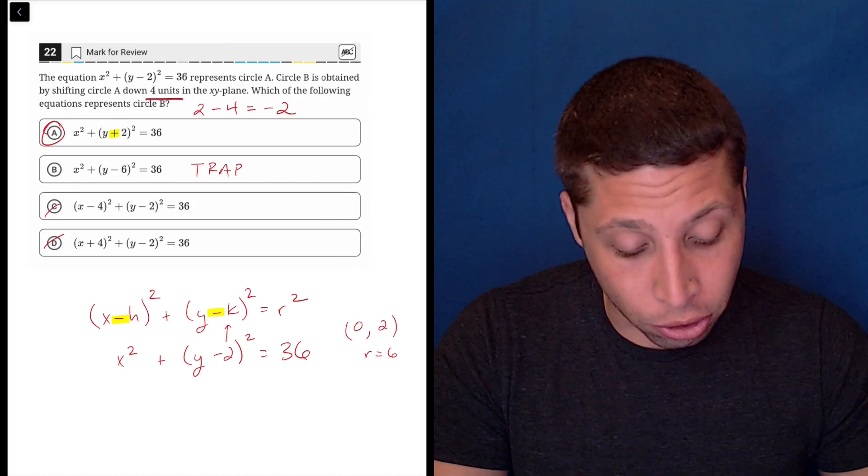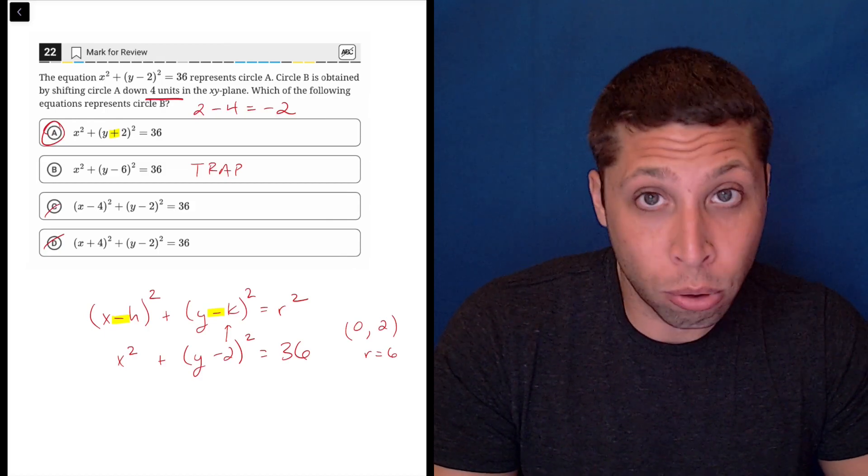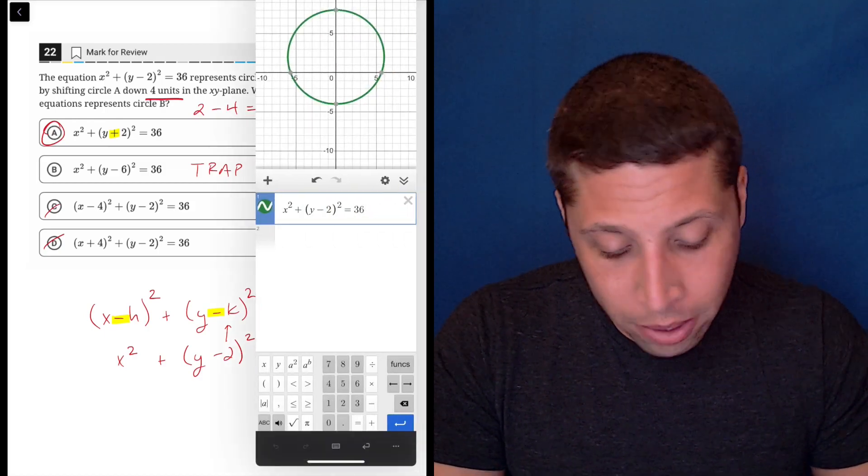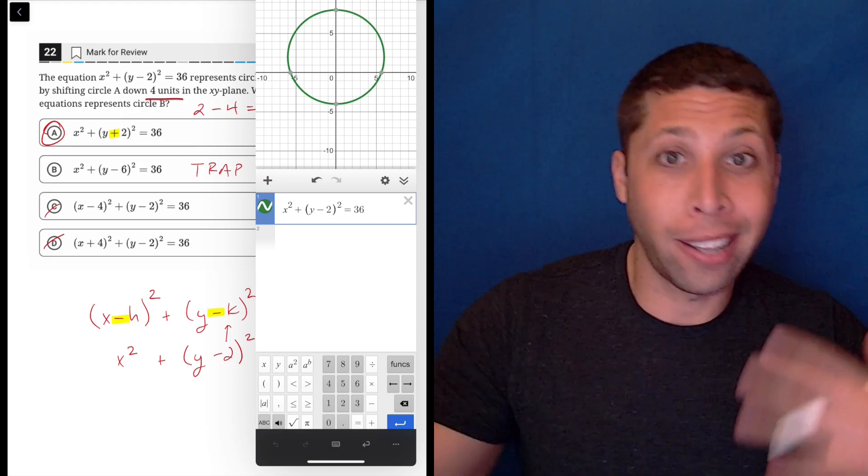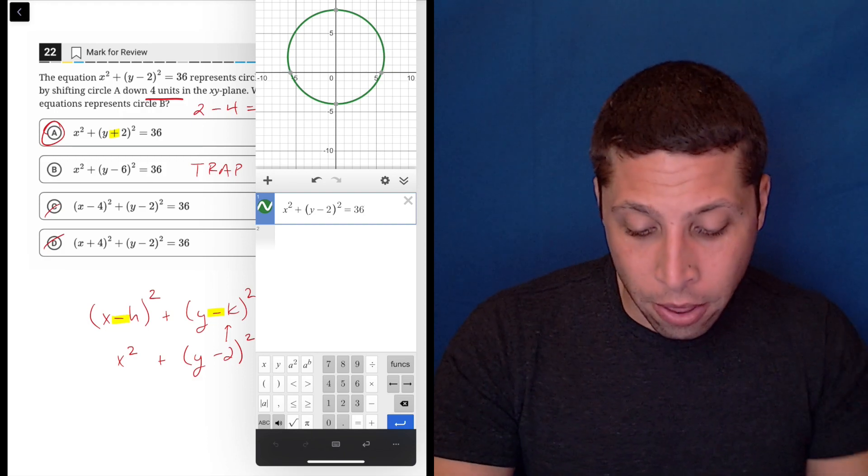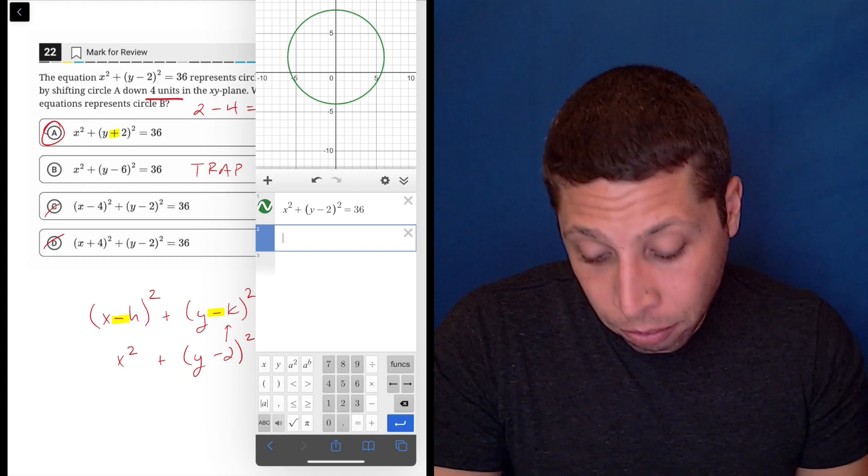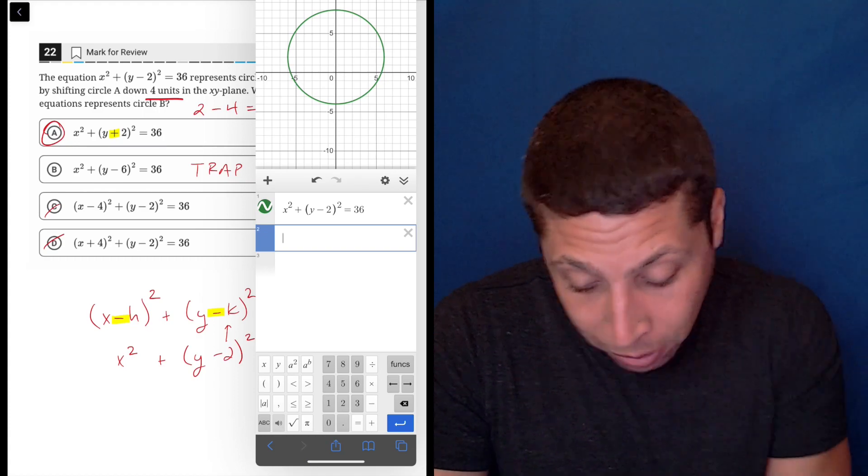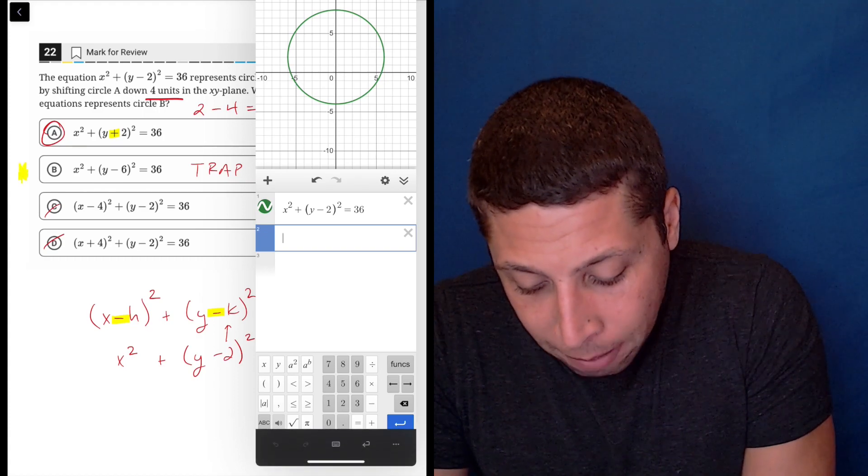One thing we could do if we have a couple extra seconds is we could graph what we think the answer is. So in this case, let's pretend I'm rushing a little bit. I would graph the original equation and then I would maybe graph what my hunch would be.